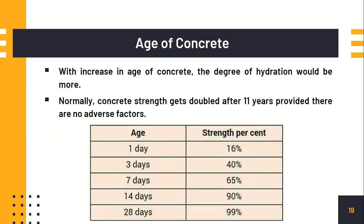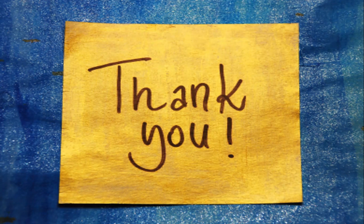The eleventh factor is age of concrete. With increasing age, hydration keeps increasing, leading to more formation of CSH gel and hence more strength. Remember: for 1 day we expect 16% of design strength; 3 days — 40%; 7 days — 65%; 14 days — 90%; 28 days — 99%. Also note that concrete strength will almost double after 11 years, unless it is subjected to adverse conditions.